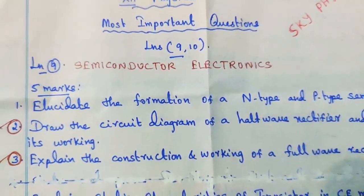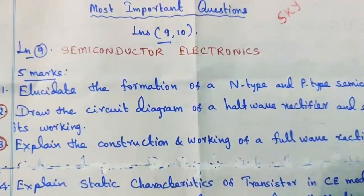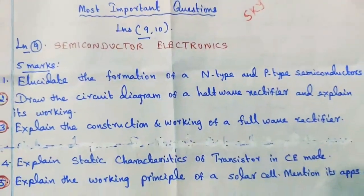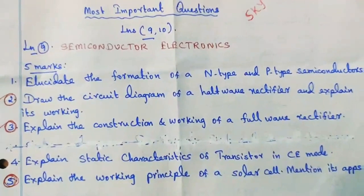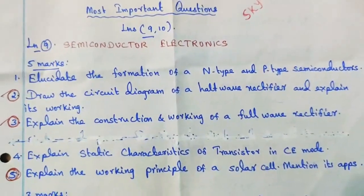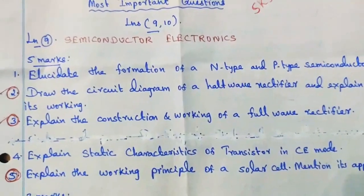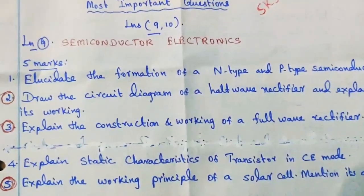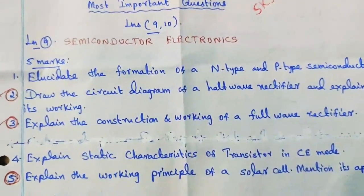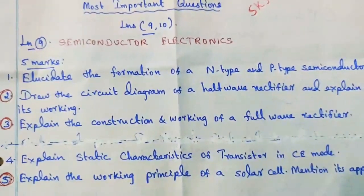1st question: elucidate the formation of N-type and P-type semiconductors. 2nd question: draw the circuit diagram of a half-wave rectifier and explain its working. 3rd question: explain the construction and working of a full-wave rectifier.